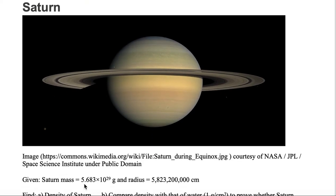We're given that Saturn's mass is 5.683 times 10 to the 29th grams, and its radius is 5,823,200,000 centimeters.